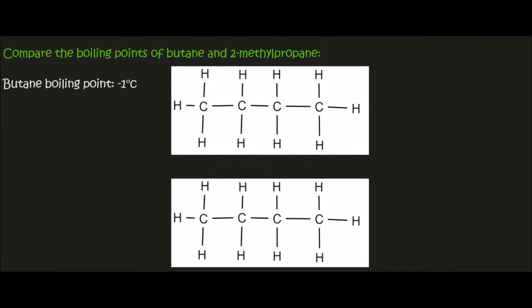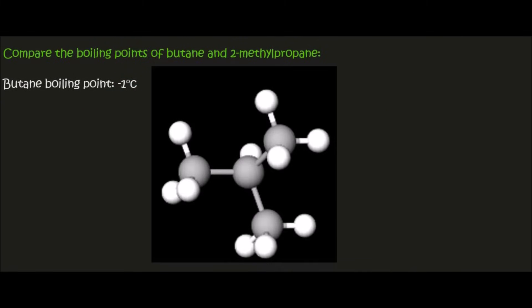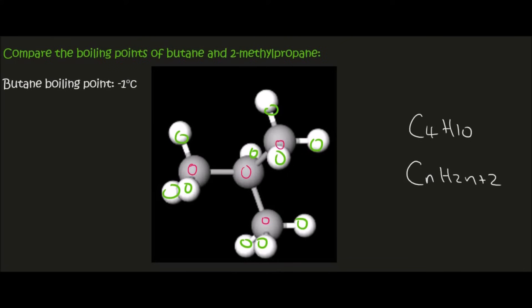Now we're going to look at 2-methylpropane. We can see it still has four carbons — one, two, three, four — and the hydrogens count up to ten. So it's C4H10, which is exactly the same as butane. Remember, any type of alkane, whether it has branches or not, will always follow the general formula CnH2n+2. That is why it is valid to compare butane with 2-methylpropane, because they have the same number of carbons and hydrogens.